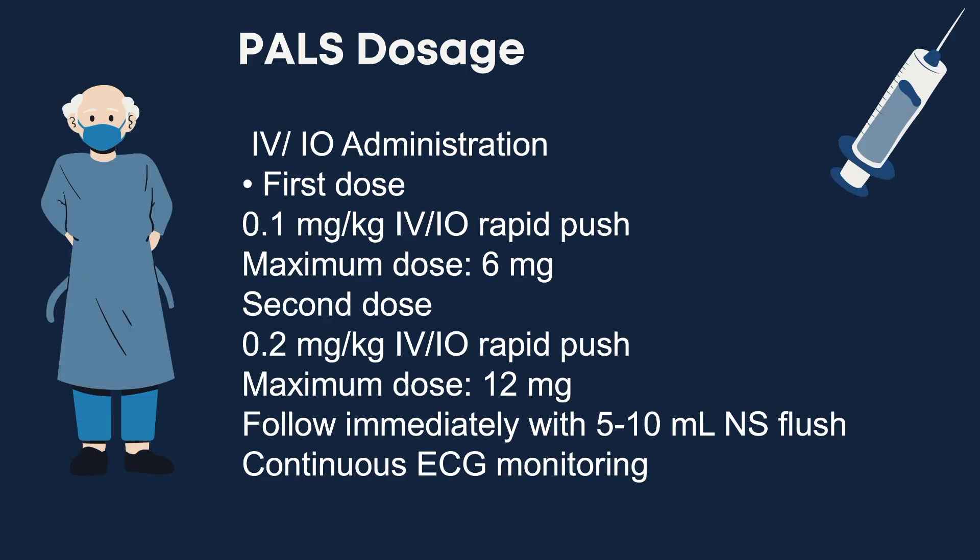For pediatric administration of Adenosine, the first dose is 0.1 mg per kg, given as a rapid push to a maximum of 6 mg, which does not exceed the adult first dose. A second dose of 0.2 mg per kg can be given 1 to 2 minutes after the first if needed, to a maximum of 12 mg. Always follow pediatric doses with a rapid 5 to 10 ml normal saline flush, and ensure to run a rhythm strip before, during and after administration.